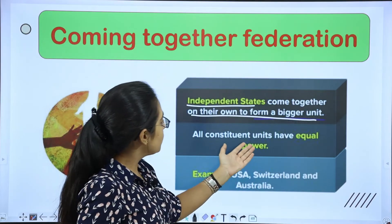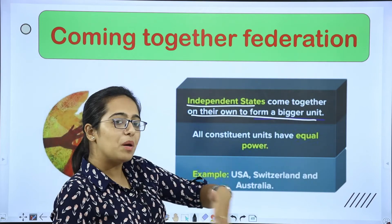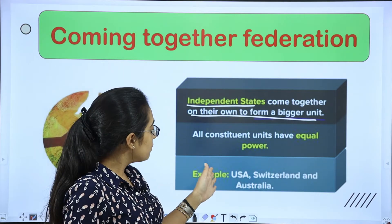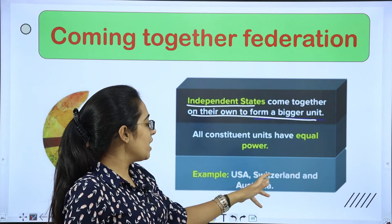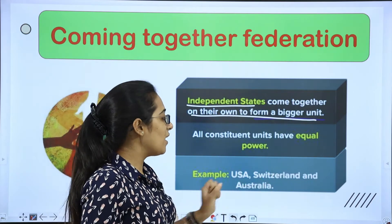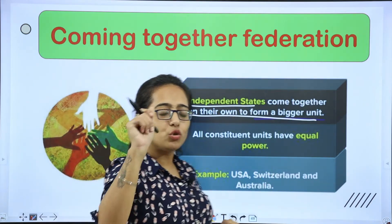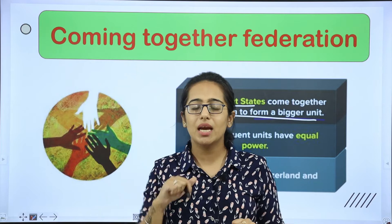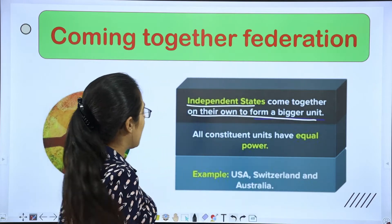They rule the unit with equal powers — everyone has equal powers. For example: USA, Switzerland, and Australia.